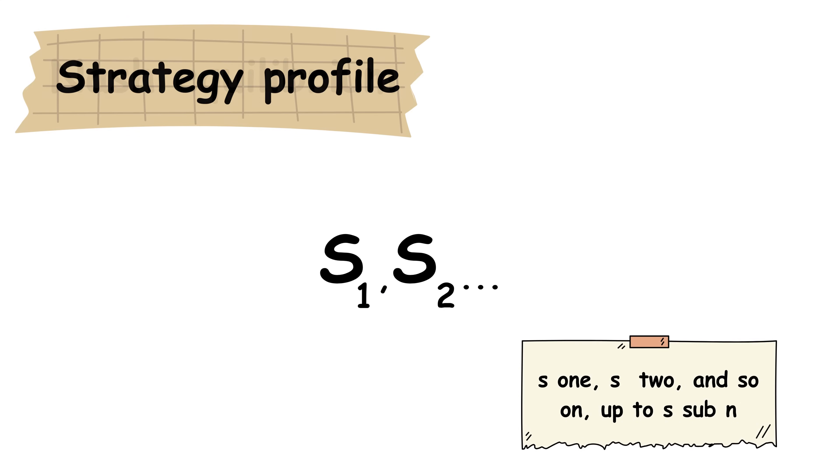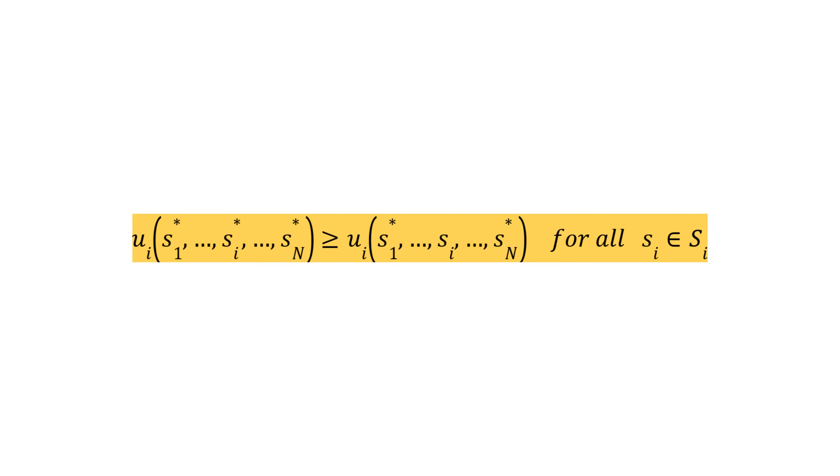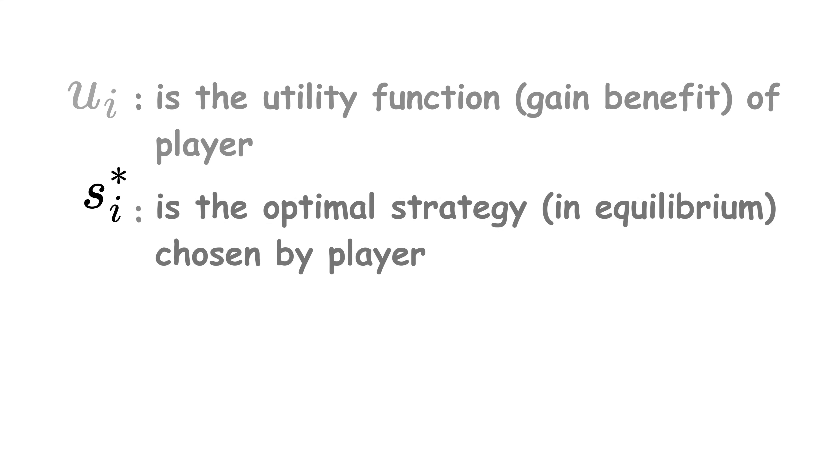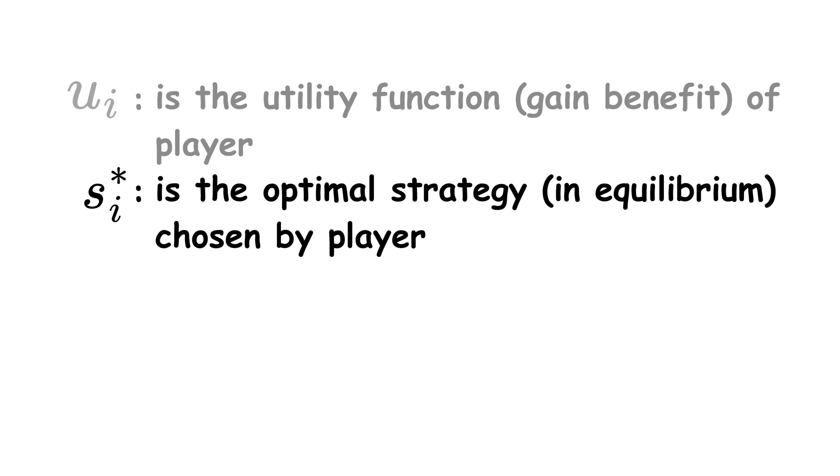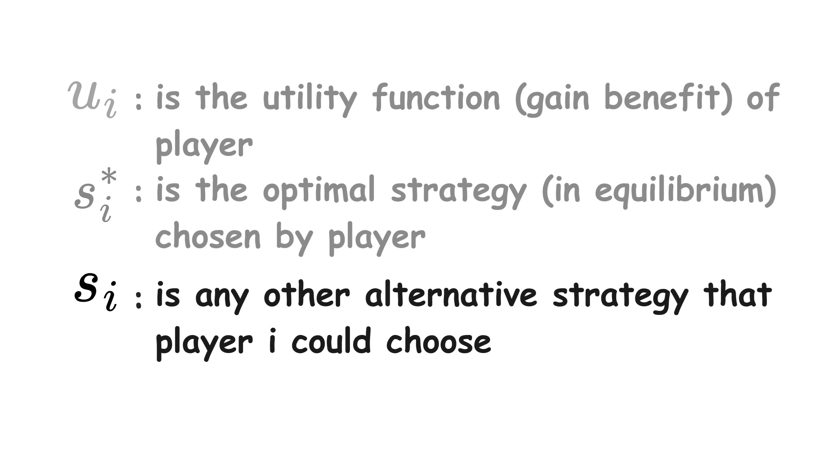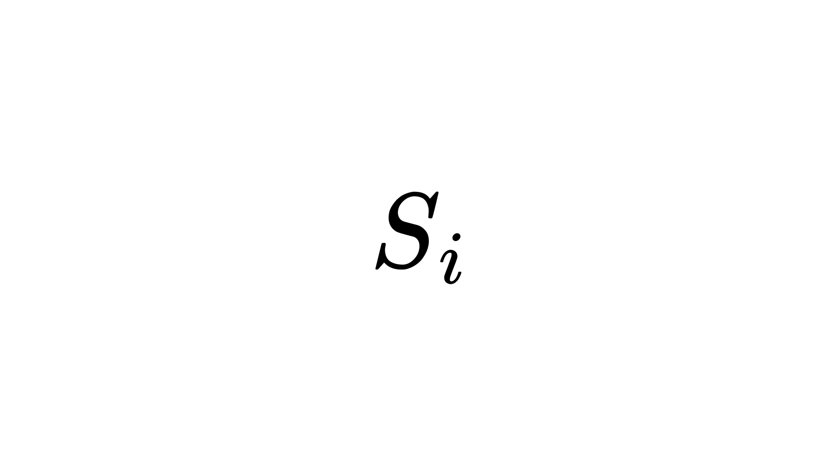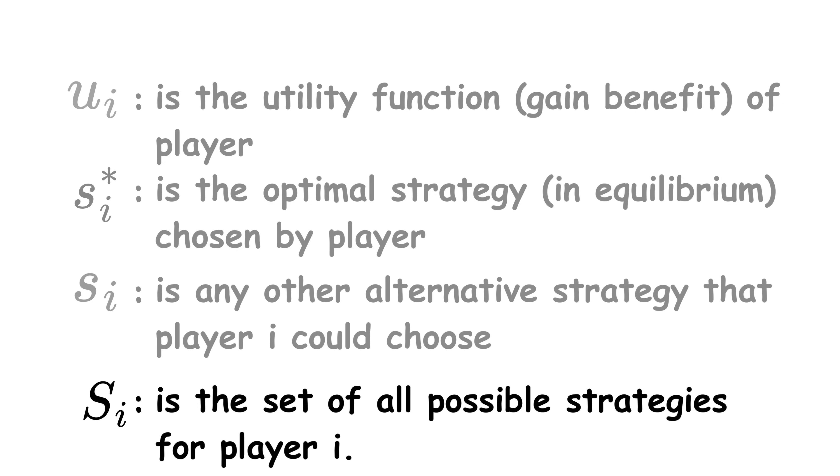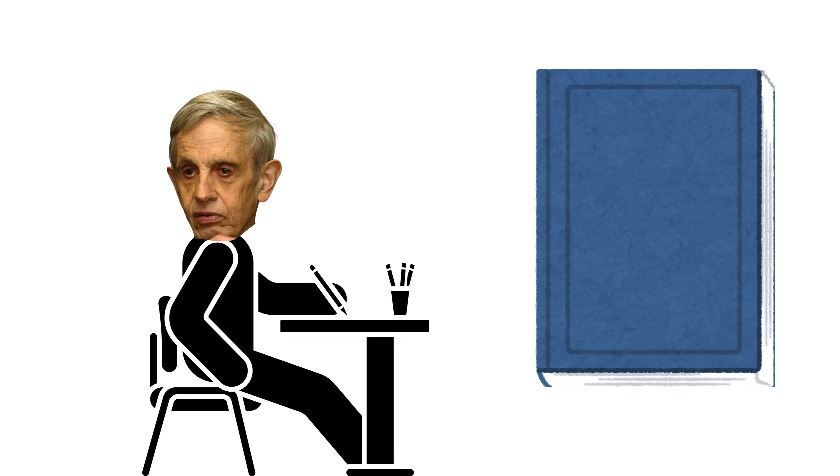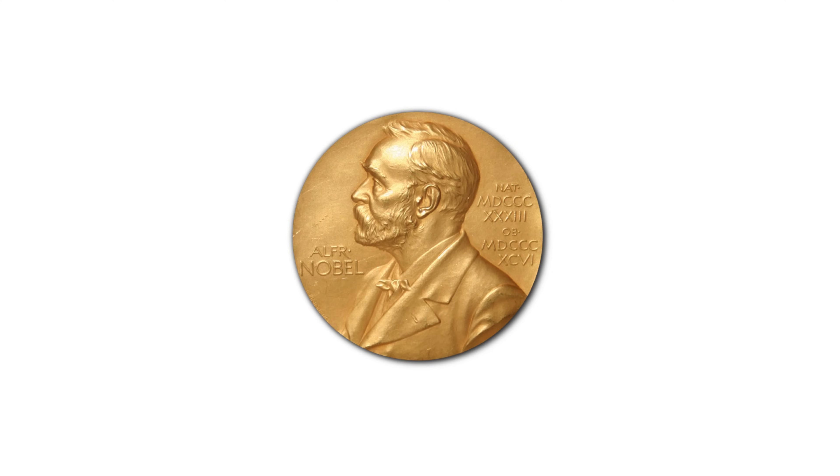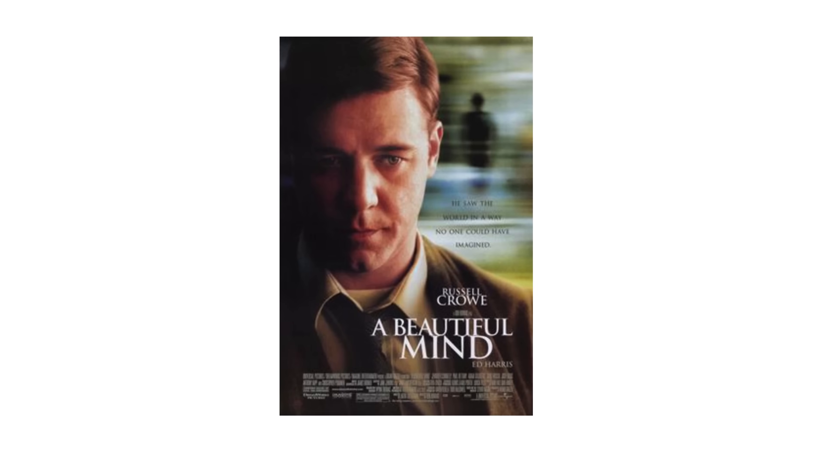where U sub I is the utility function, gain benefit of player I, S sub I star is the optimal strategy in equilibrium chosen by player I, S sub I is any other alternative strategy that player I could choose, capital S sub I is the set of all possible strategies for player I. The Nash Equilibrium formalized rational behavior in strategic systems. His work, initially ignored, gained global recognition decades later, culminating in the Nobel Prize in economics in 1994. His life was adapted into a film, A Beautiful Mind, extending his fame beyond the academic world.